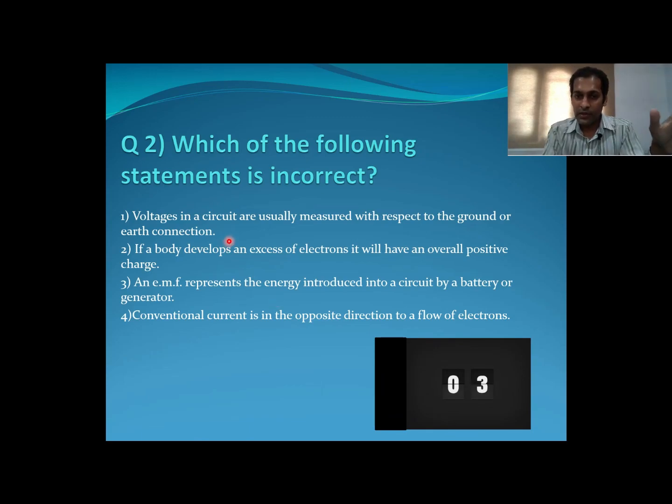The voltage is the difference, we always have higher potential and lower potential, and lower potential we consider as ground. So this statement is correct. And EMF represents the energy introduced into a circuit by battery, it's correct.